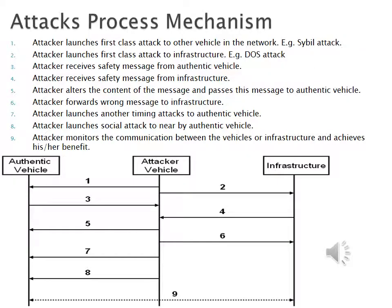Attack Process Mechanism: The attacker launches a first-class attack against another vehicle in the network — for example, a Sybil attack. The attacker also launches a first-class attack against infrastructure — for example, a DoS attack. The attacker receives safety messages from an authentic vehicle, and also receives safety messages from the infrastructure.